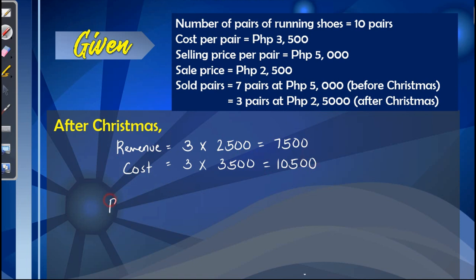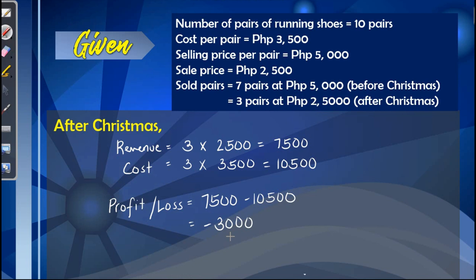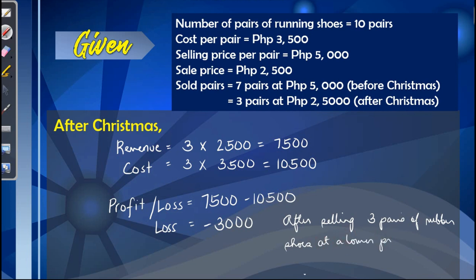To identify if there is a profit or loss, we subtract revenue and cost: $7,500 minus $10,500 gives us negative $3,000. Since the value is negative, it means there is a loss of money. We conclude that after selling 3 pairs of running shoes at a lower price than the cost, there is a loss of $3,000 after Christmas.